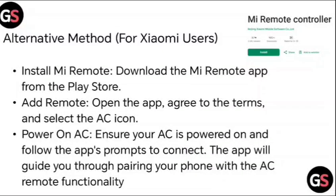Alternative method for Xiaomi users: Install the Mi Remote app. Download the Mi Remote app from the Play Store. Open the app, agree to the terms, and select the AC icon.